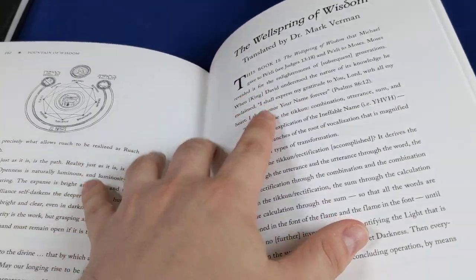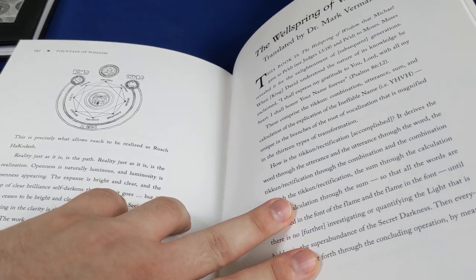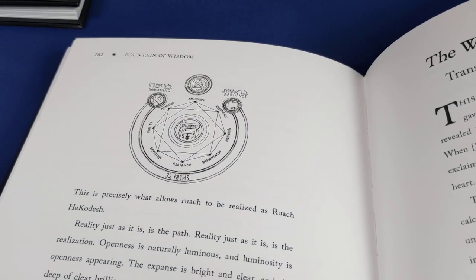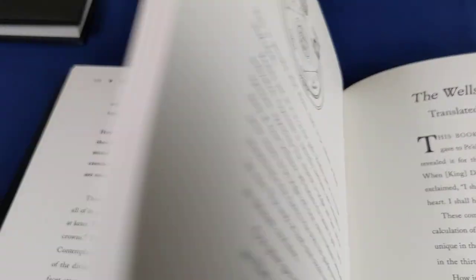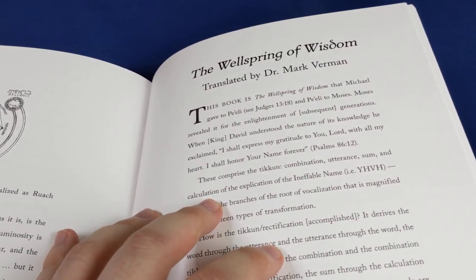What he does is get kabbalistic books and alchemical books and work out how everything relates to everything else and create these wonderful diagrams. This is a very simple one. I'll show you some very beautiful ones in a few moments.